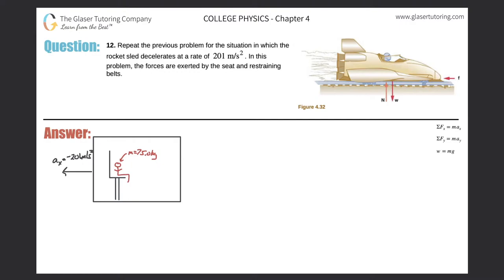Number 12, repeat the previous problem for the situation in which the rocket sled decelerates at a rate of 201 meters per second squared. In this problem, the forces are exerted by the seat and the restraining belts.